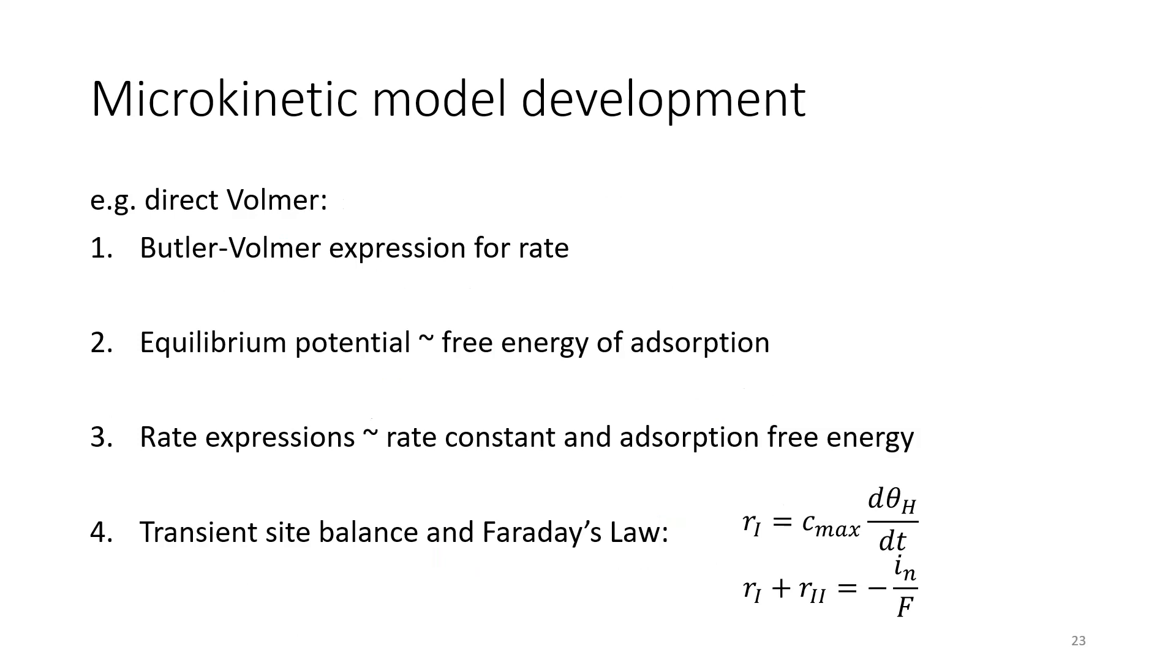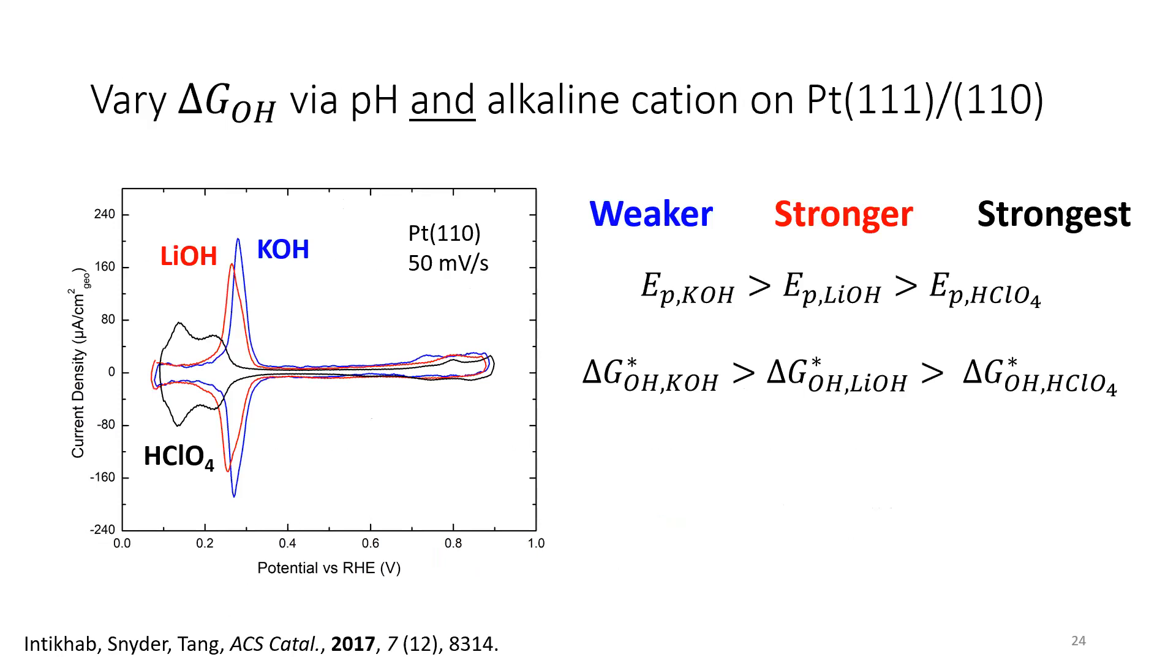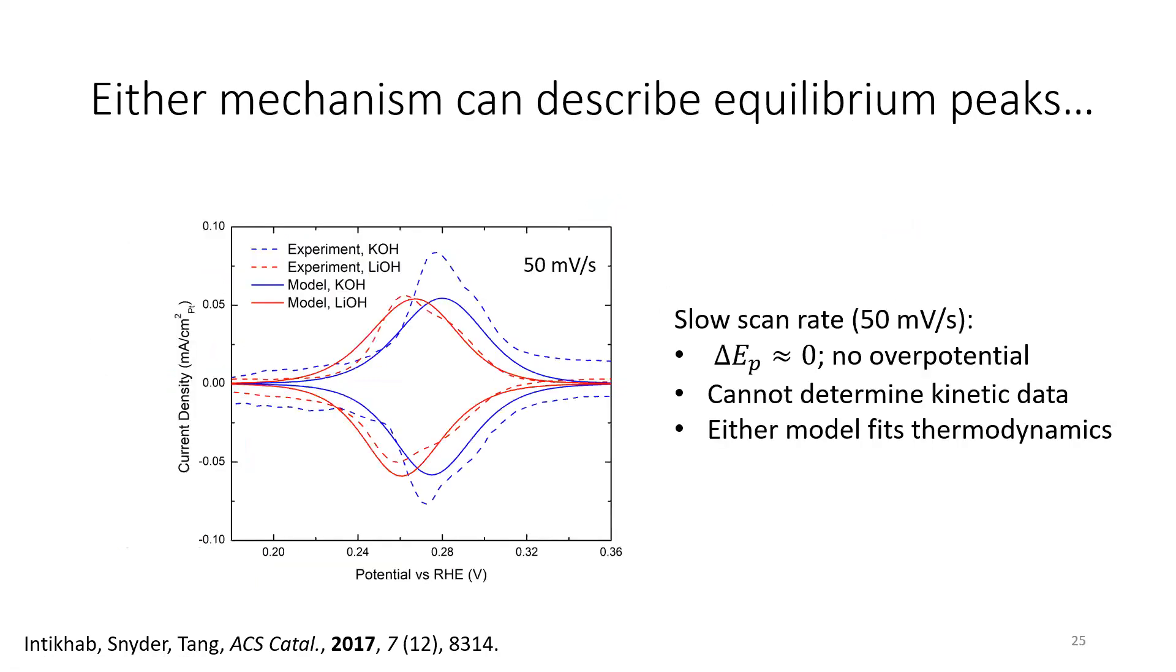Fortunately, I work with Josh Snyder who does single crystal measurements, and he got some really nice clean data where we see adsorption peaks for platinum 110 in a variety of electrolytes. So you can see here, the black is perchloric acid, the red is lithium hydroxide, the blue is potassium hydroxide. And as my peak shifts to the right, I can use that to correspond to the hydroxide adsorption strength. So it's the weakest in potassium hydroxide and the strongest in acid.